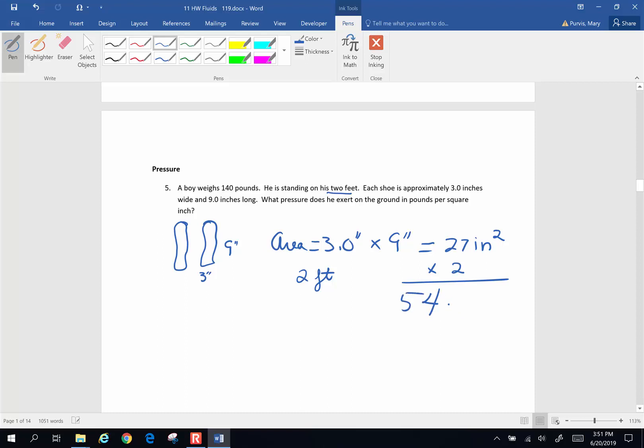Now I want to know the pressure he's going to exert on the ground in pounds per square inch. Pressure is force divided by area, 140 pounds divided by 54 inches squared, and when I take 140 divided by 54, I get 2.6 pounds per square inch. Not too bad.